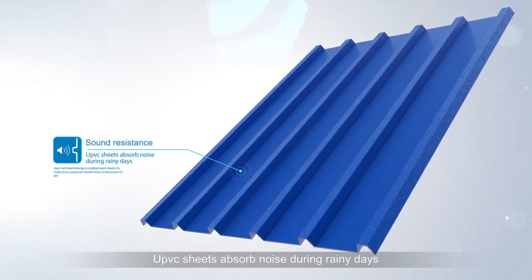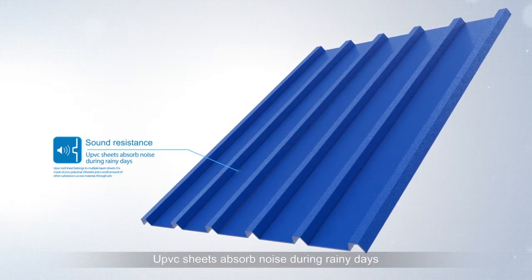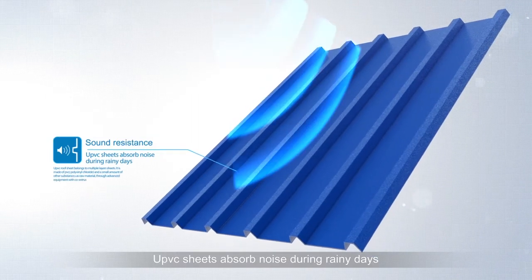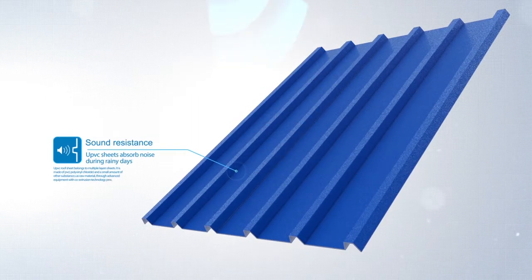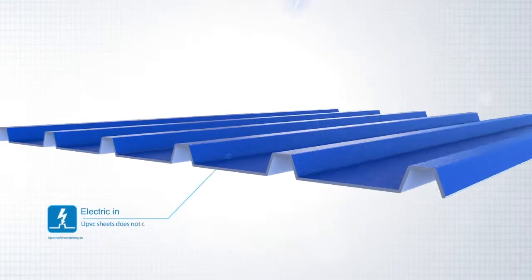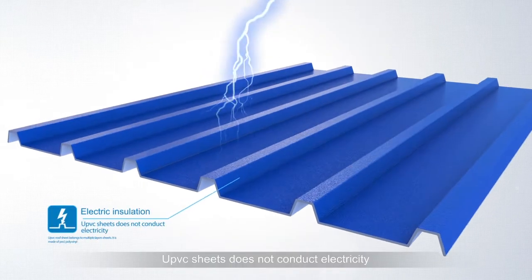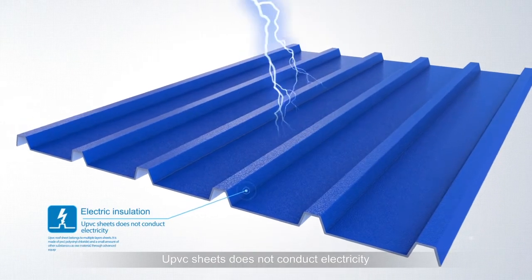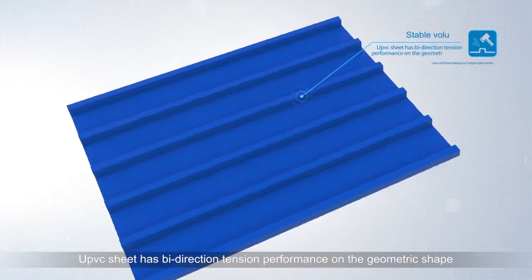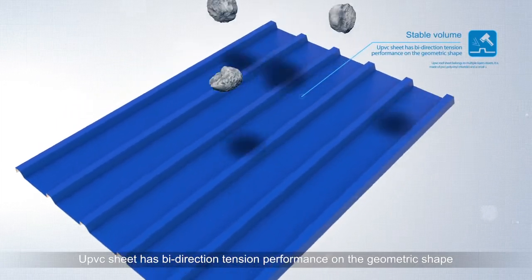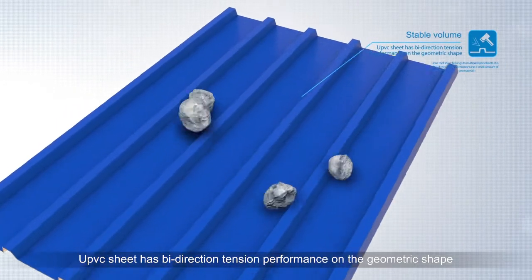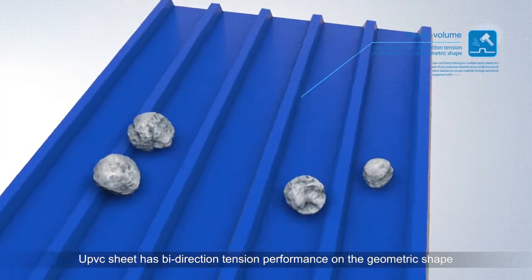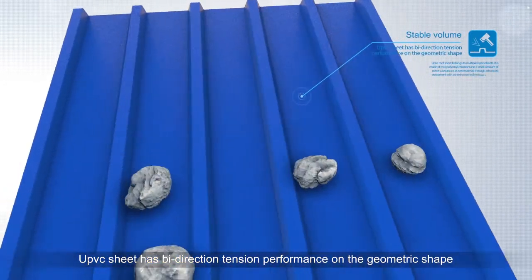UPVC sheets absorb noise during rainy days. UPVC sheets do not conduct electricity. UPVC sheet has bi-direction tension performance on the geometric shape.